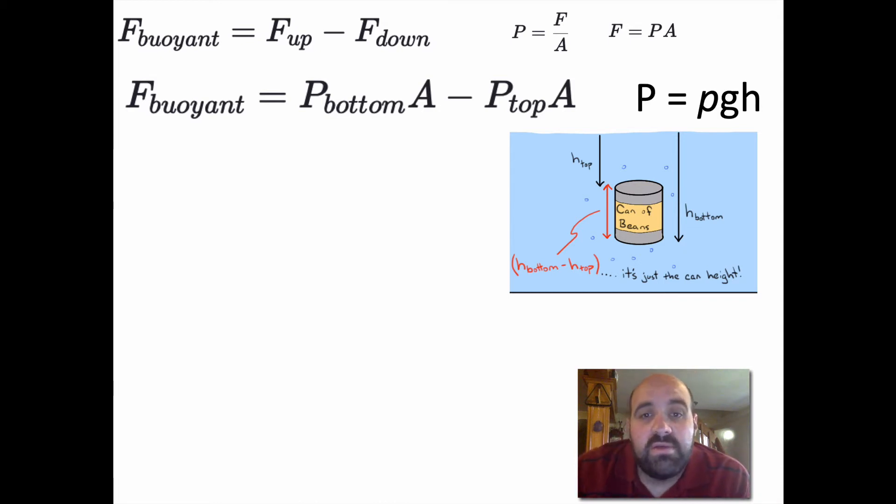We know that pressure is ρgh. Pressure is density times gravity times height. What we're going to do is plug in this ρgh for this pressure and plug it in for this pressure. I know it's getting a little confusing now. Just watch the video, slow it down, read the PowerPoint. But this is what we end up with: buoyant force equals ρgh at the bottom times area minus ρgh at the top times area. We just did two very simple substitutions. We plugged in PA for F and then plugged in ρgh for P. We're left with this formula right here.